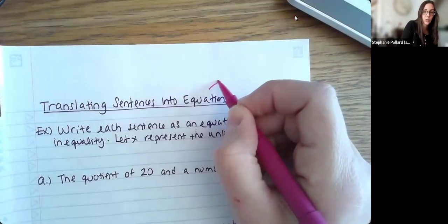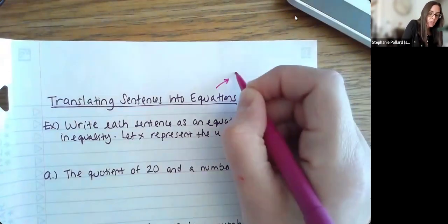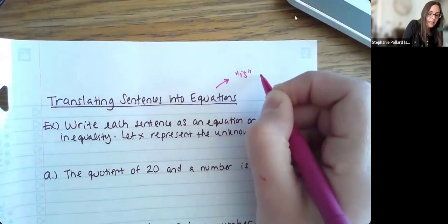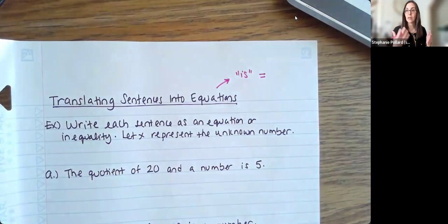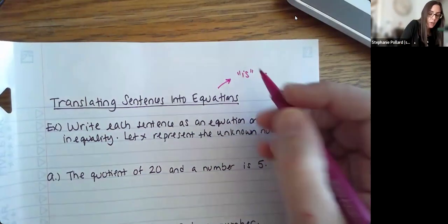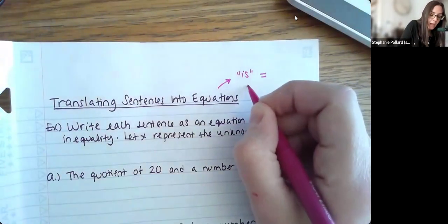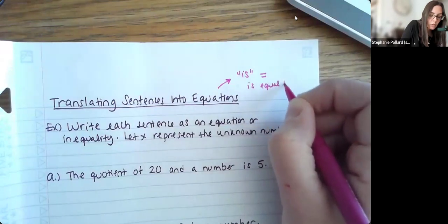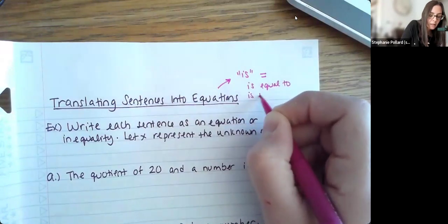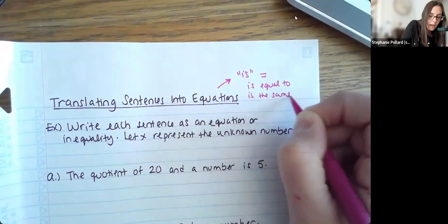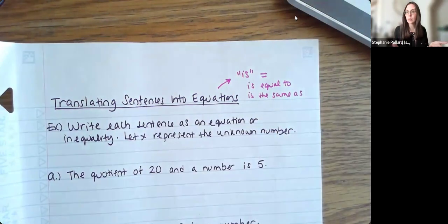So one thing to note for equations when you're reading through, if you see just the word is, that is usually the biggest flag that you have an equation there. But there's also other words as well. Of course, if you see something like is equal to, or is the same as, that also would mean equal.